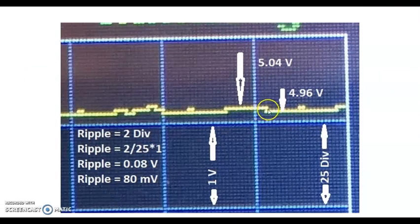Five volt is here. When I measure these dots, there's 25 divisions. Two division is here. Two divided by 25 multiplied by one volt. The ripple is 0.08 volt. That's 80 millivolt. So the top line is 5.0 volt. The bottom line is 4.96 volt.